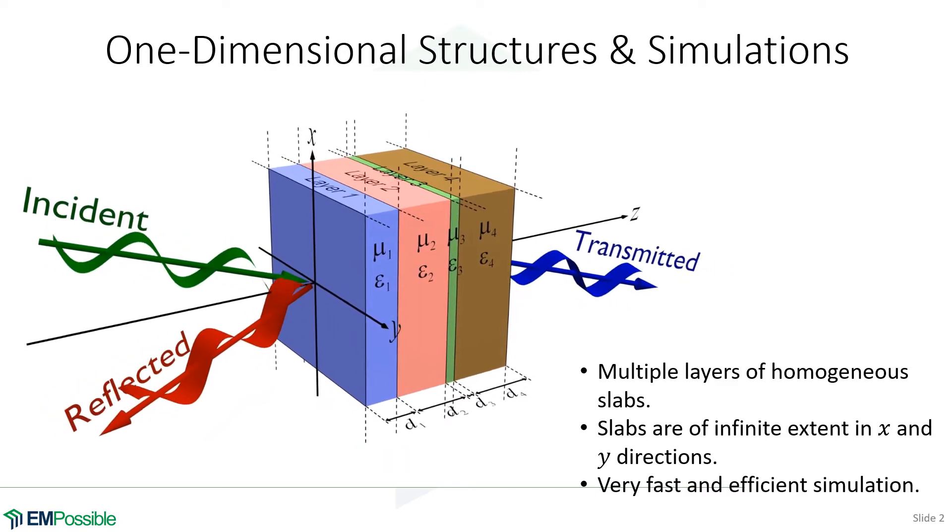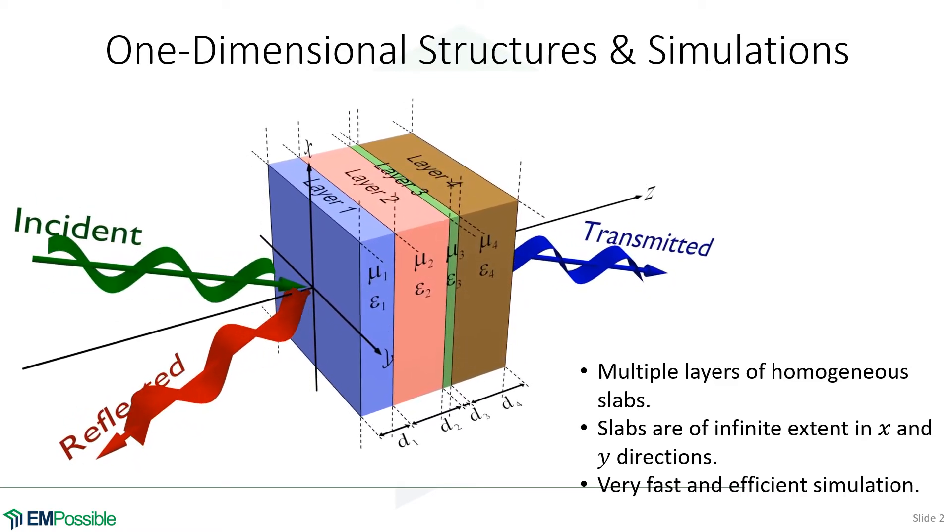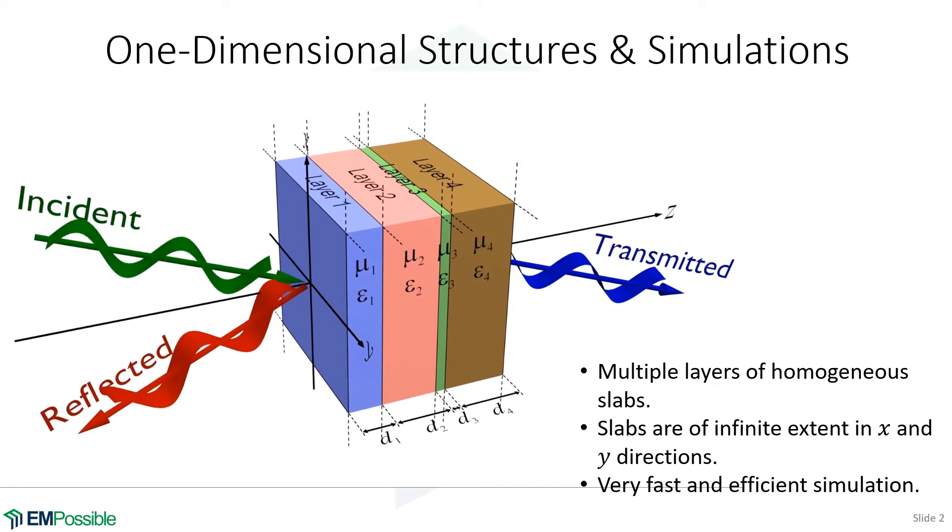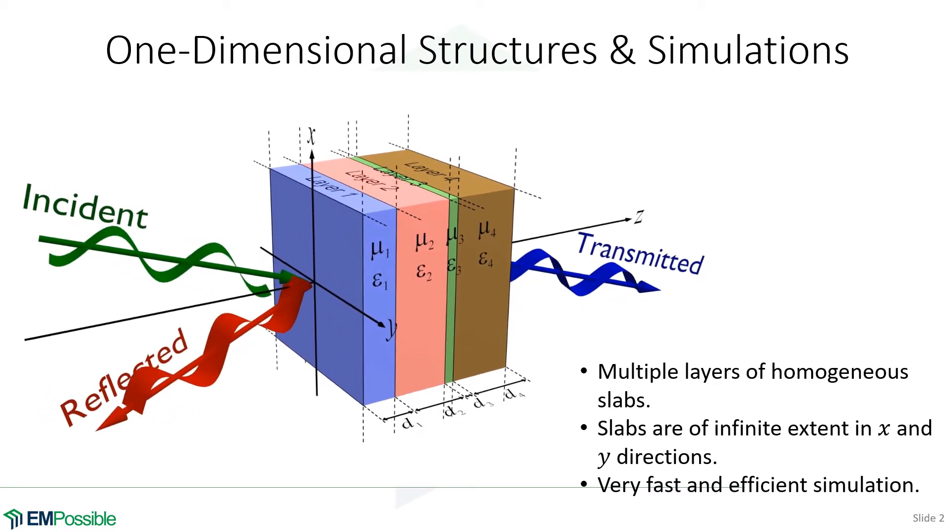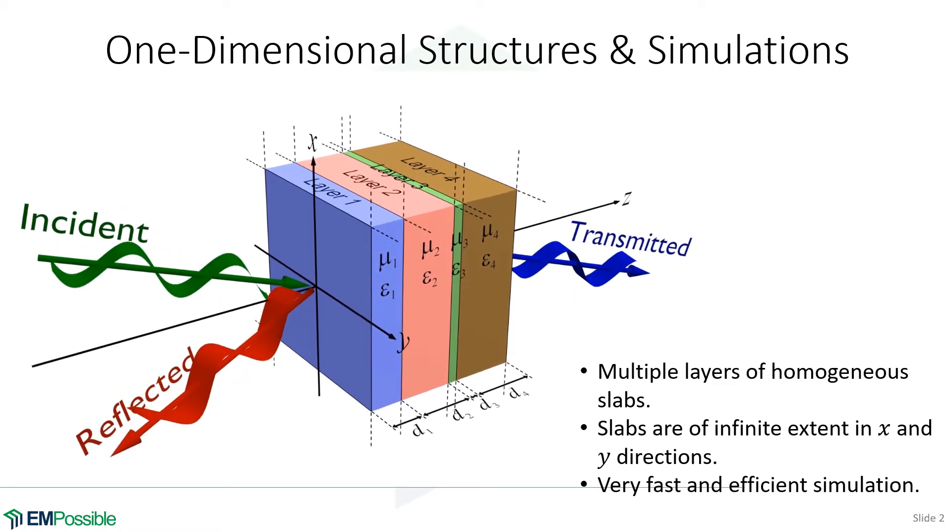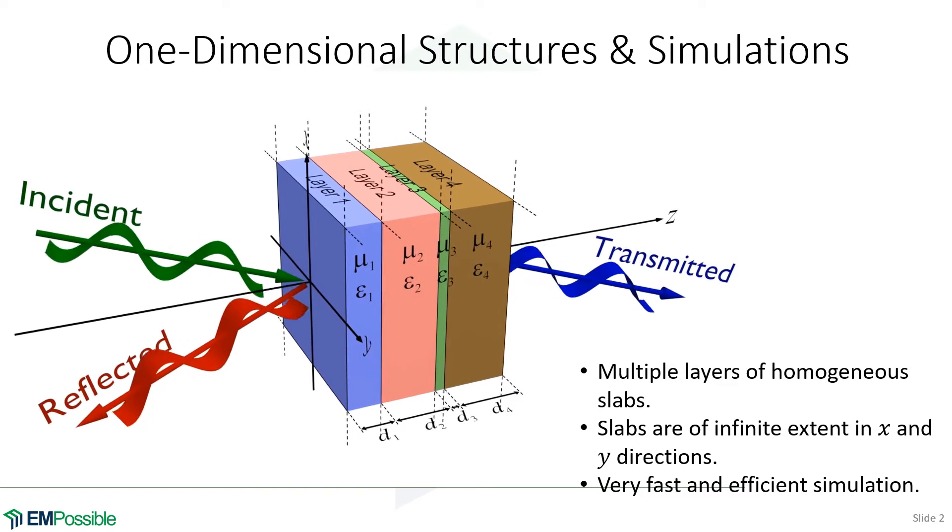Even though the waves cannot be directed along the z-axis, all that's happening to them in the x and y directions is that they accumulate phase. Their amplitude or anything else is not changing. That lets us handle the waves in the x and y directions analytically.